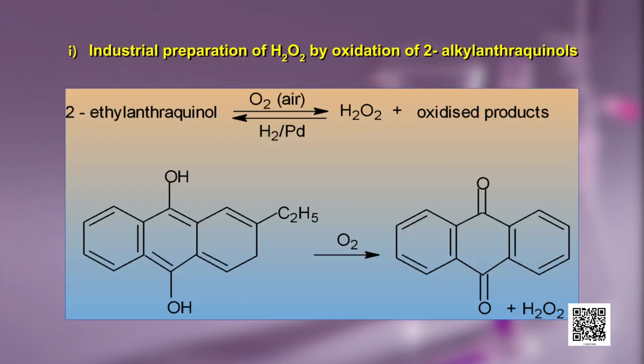The industrial preparation of hydrogen peroxide is by oxidation of 2-alkyl anthraquinols. 2-ethyl anthraquinol on oxidation gets converted to the corresponding quinone and we get hydrogen peroxide in this reaction as shown by the chemical equation. Hydrogen peroxide formed here is 1 percent in concentration. It is extracted with water and concentrated to approximately 30 percent by mass by distillation under reduced pressure.